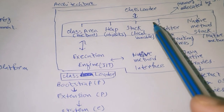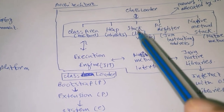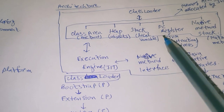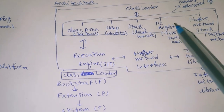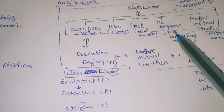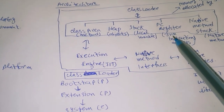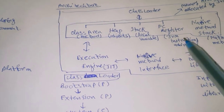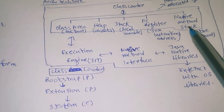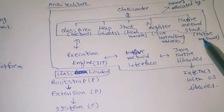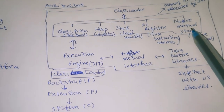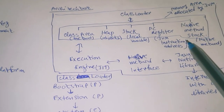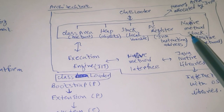Inside the stack area, recursive method calls are handled and local variables are stored. The PC register is used to store the address of the current execution instruction of the JVM. The native method stack is a stored area for whichever methods are native methods — they are stored in the native method stack.